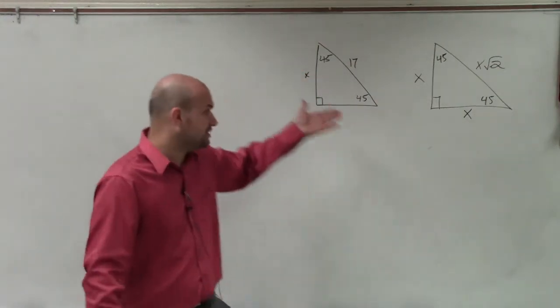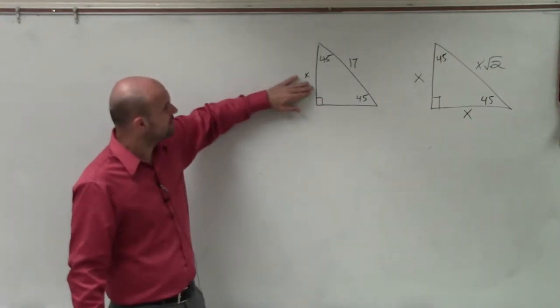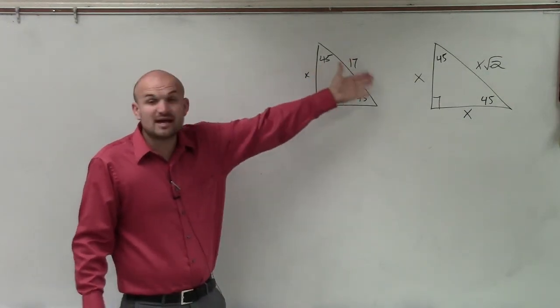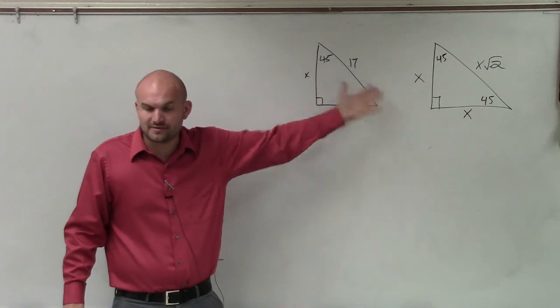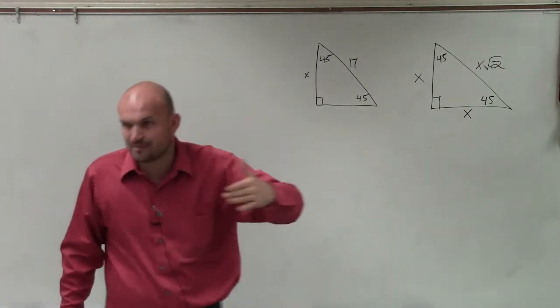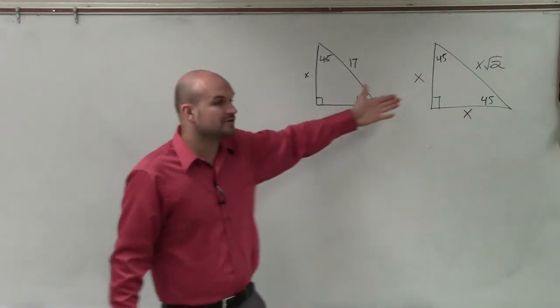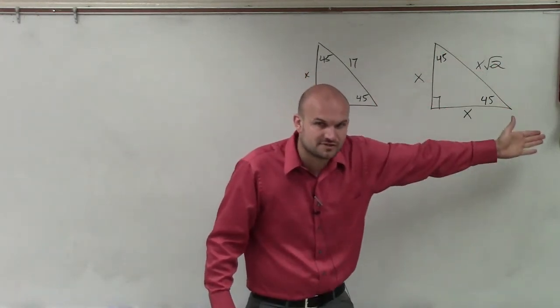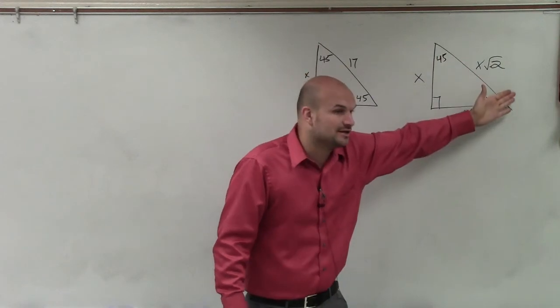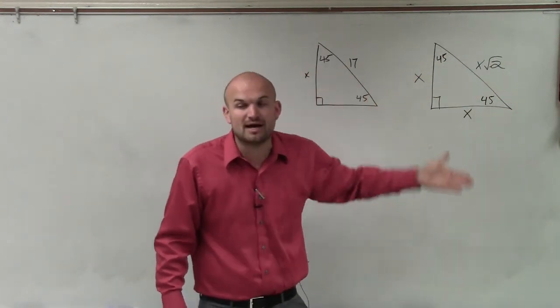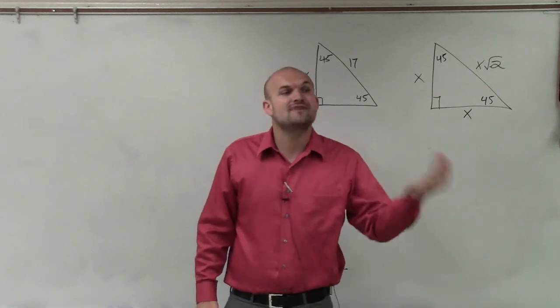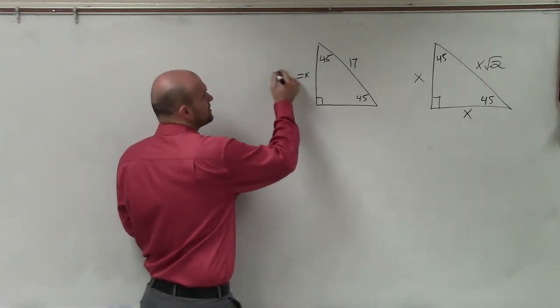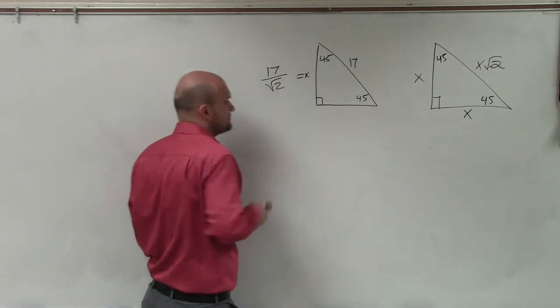So in this case, we look at the triangle we have. Unfortunately, we don't have what actually the length is of the side. The only thing we have is the length of the hypotenuse. So we have to start thinking about this and saying, OK, if I know the leg, Brandon, to go from the leg to the hypotenuse, I need to multiply by the square root of 2. So if I have the hypotenuse and I want to go back to the leg, instead of multiplying, I would have to divide by the square root of 2. So x is going to equal 17 divided by the square root of 2.